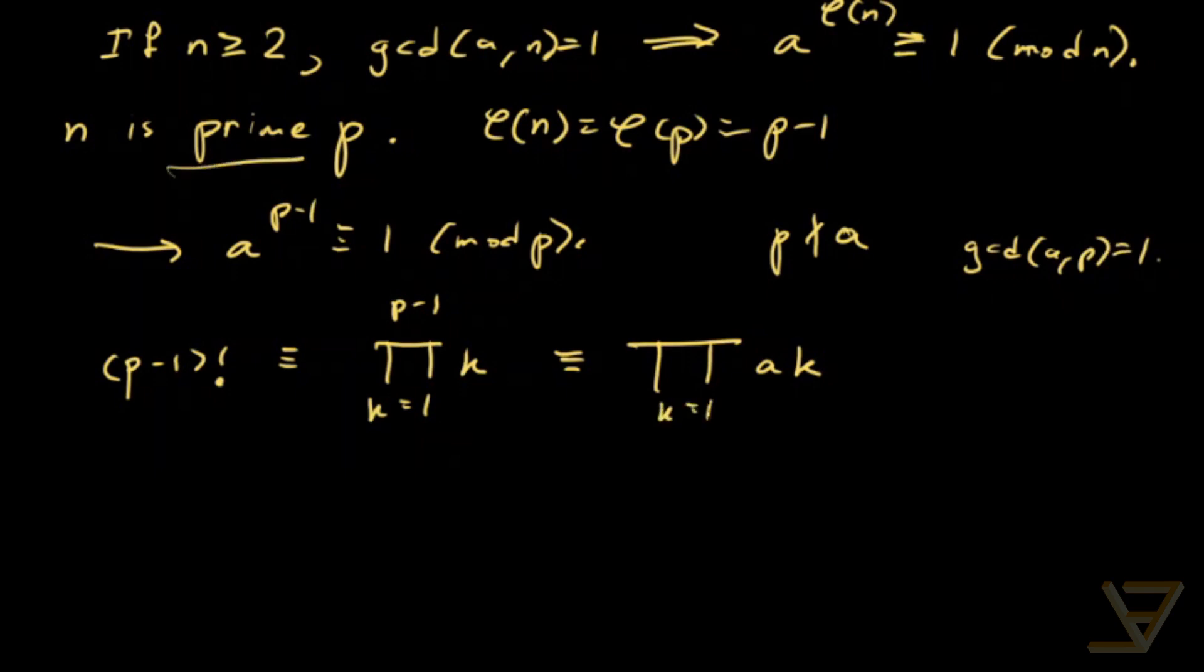So we get k equals to 1 through p minus 1. And this is congruent to a to the p minus 1 times the product of k equals to 1 to p minus 1 of k. And what we get then is that we can cancel out these from this side. In fact, what we can write it as is a to the p minus 1 times p minus 1 factorial. That makes it a bit more transparent.